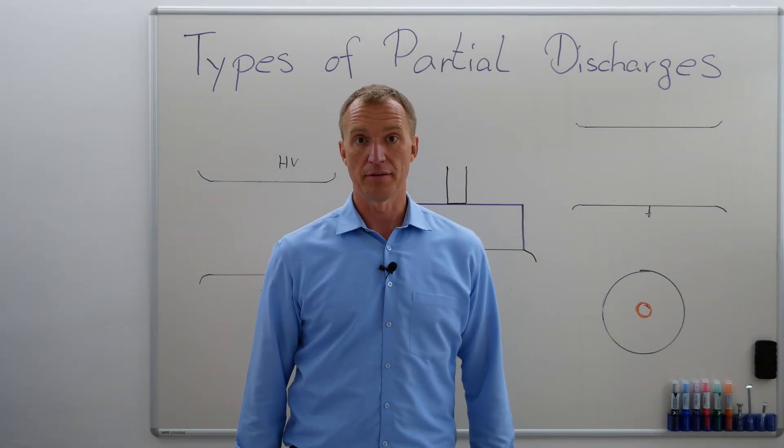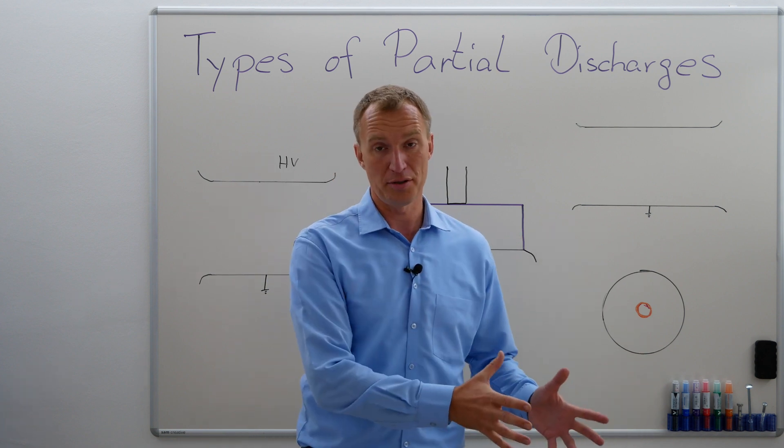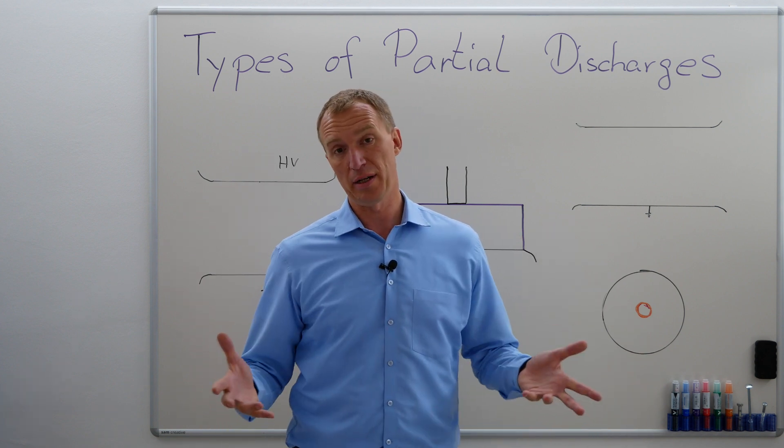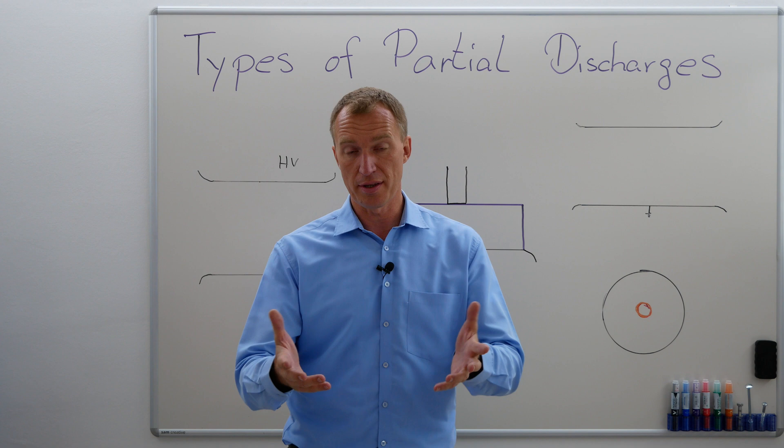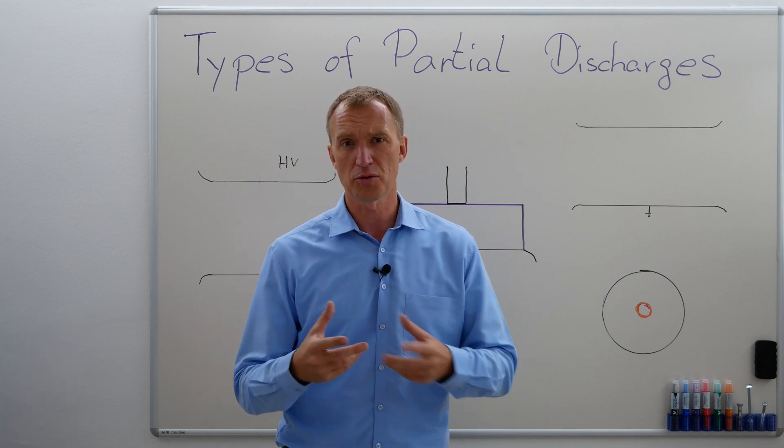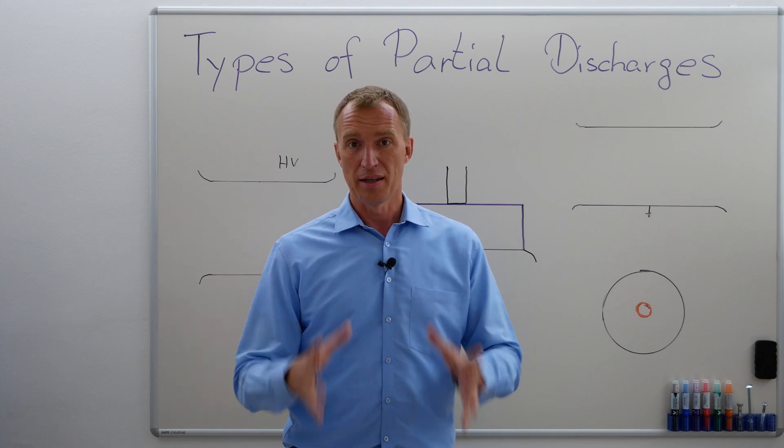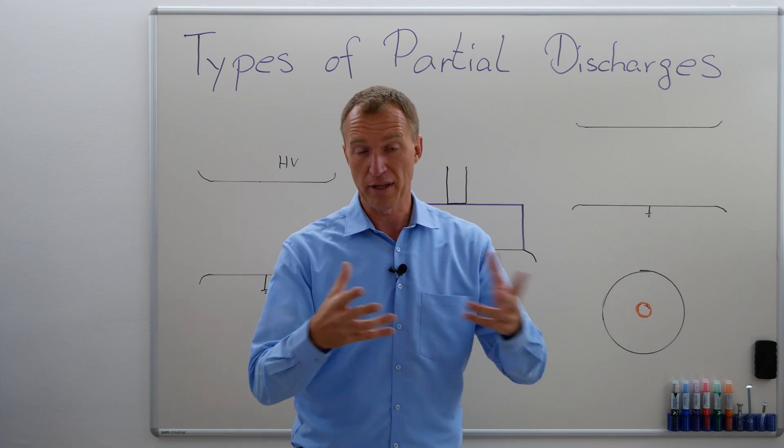What types of partial discharges are there? Well, very easy. It's an external partial discharge and internal partial discharge, but we have certain subcategories. And in this chapter, in this channel, you find a couple of videos about corona, about surface discharge. I'm trying to get close to an internal void discharge as well, but let's first talk about the different kinds.